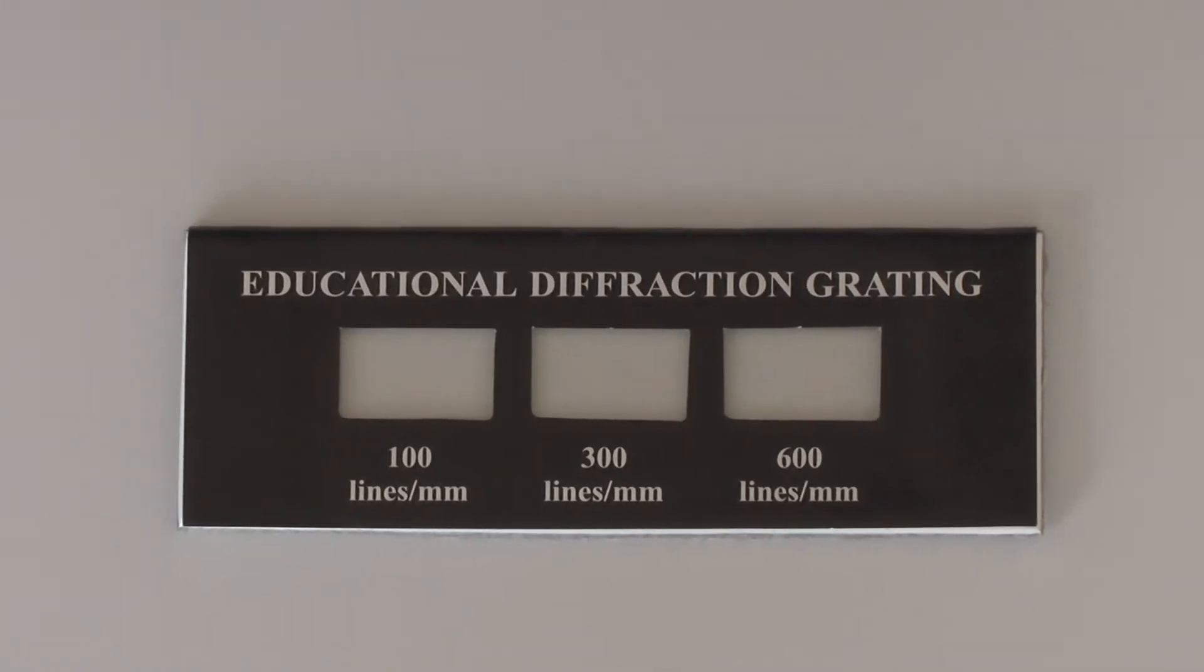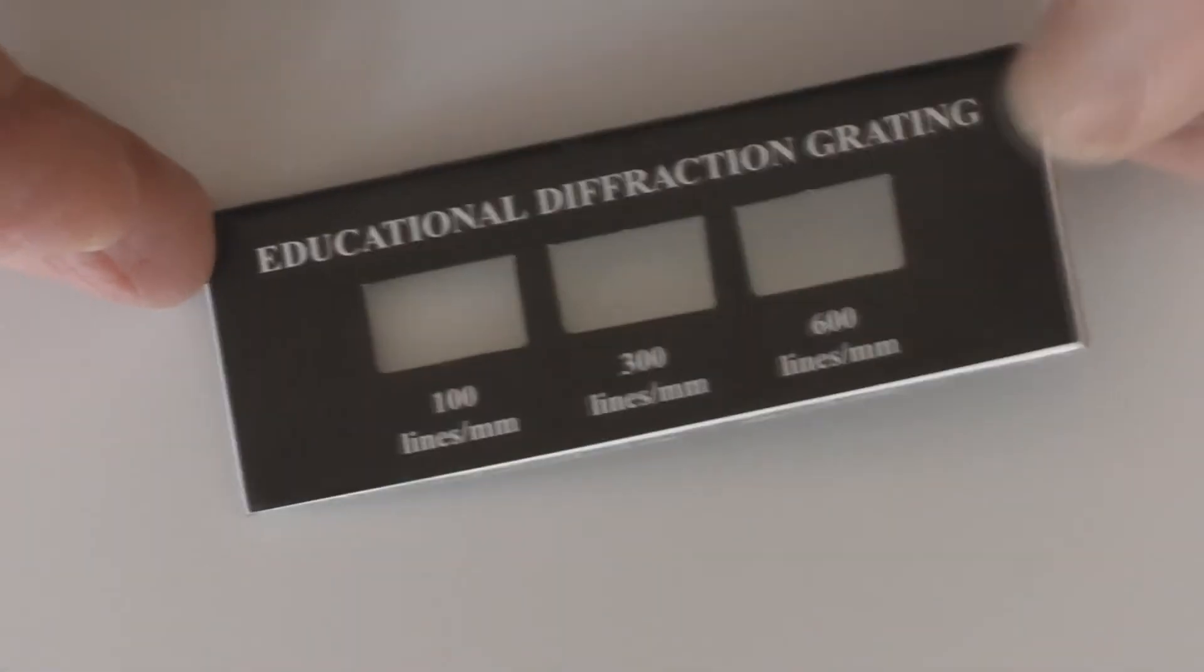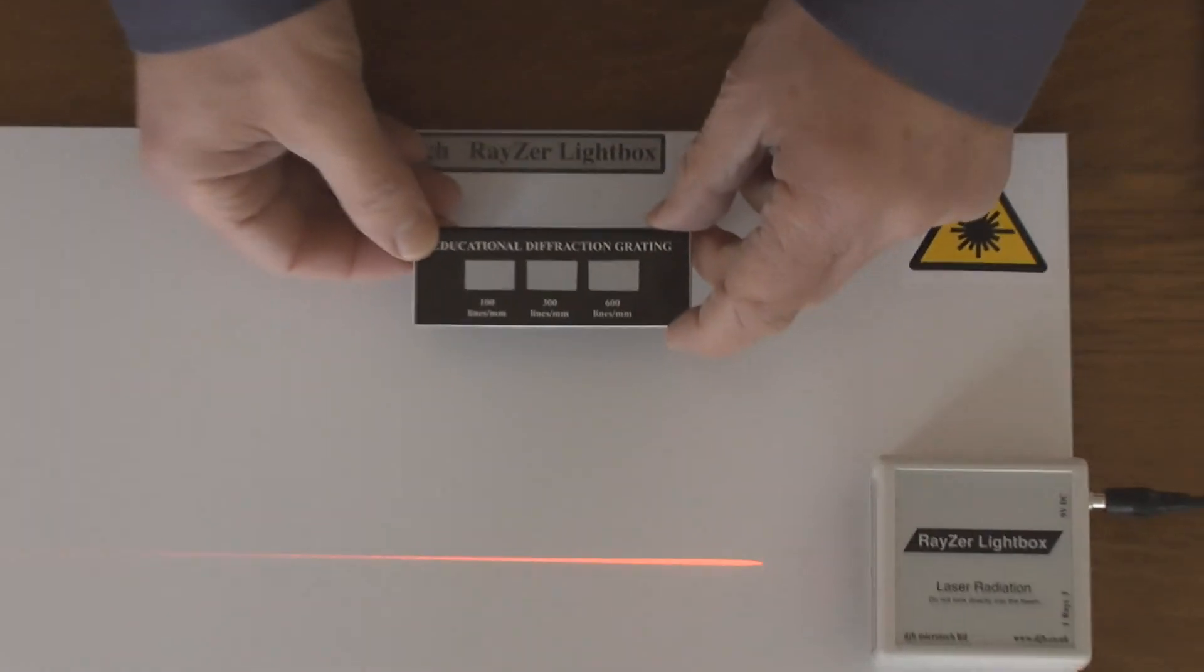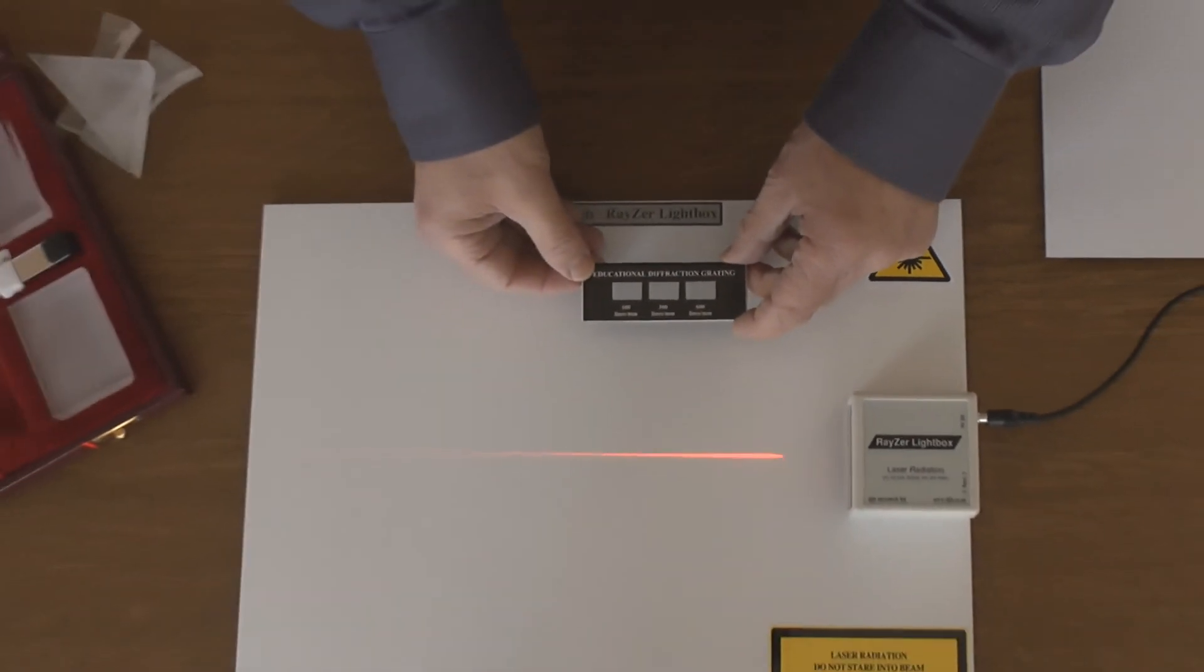I'm going to take a diffraction grating and with this set to one beam, it's possible to calculate the wavelength of this monochromatic laser light.